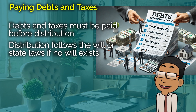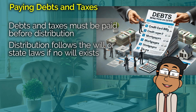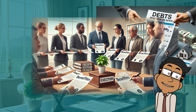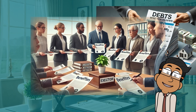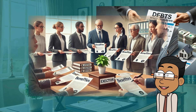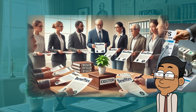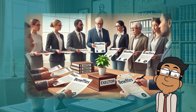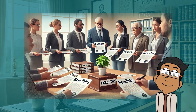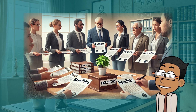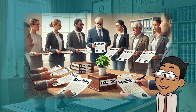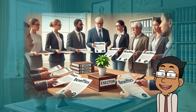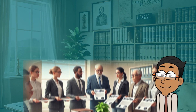Once all debts and taxes have been settled, the executor can start distributing the remaining assets to the beneficiaries. If there's a will, the distribution will follow the instructions laid out in it. If there's no will, the distribution follows the state's intestacy laws, which dictate how the assets should be divided among the deceased's closest relatives.